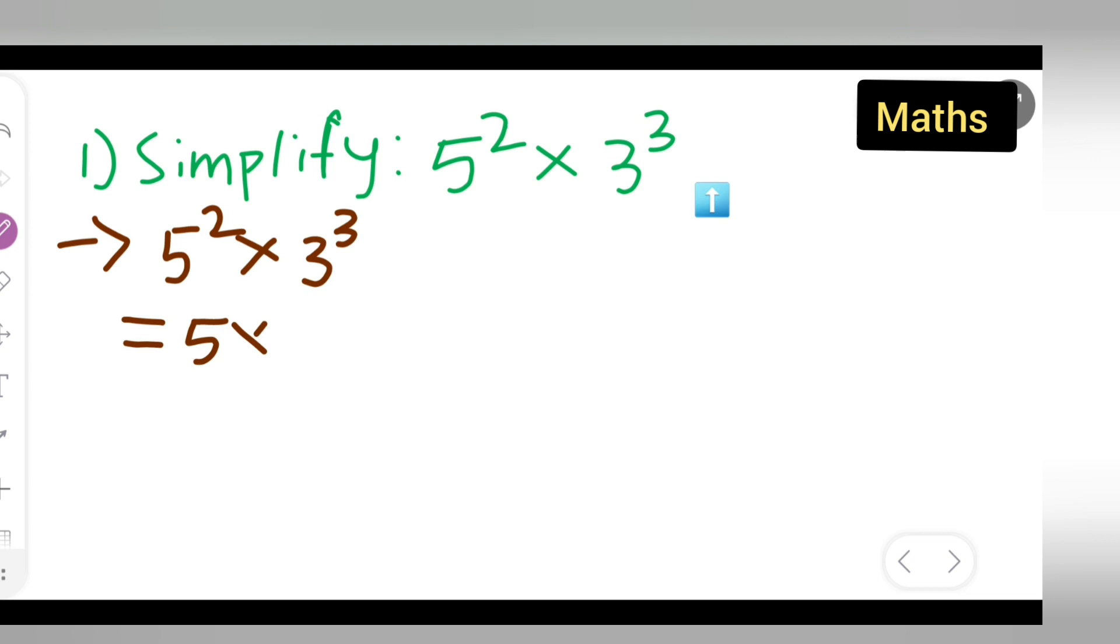5 square means 5 multiplied by 5. 3 cube means 3 multiplied 3 times, right? 3 multiplied by 3 multiplied by 3.